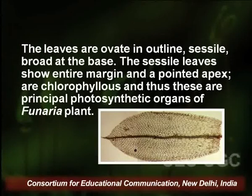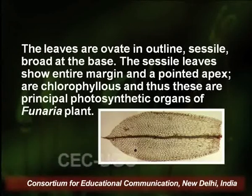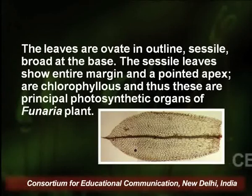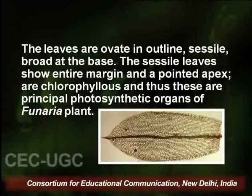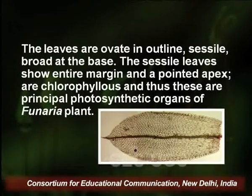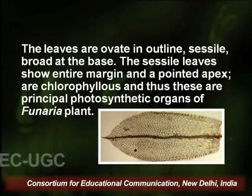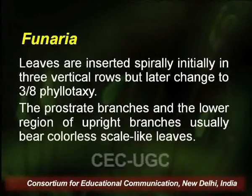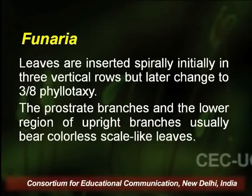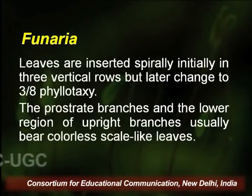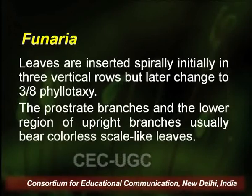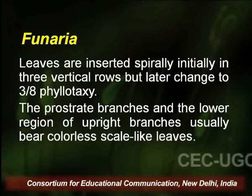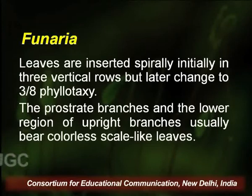The leaves in Funaria are ovate in outline, sessile, and broad at the base. They show an entire margin — meaning no indentation or discontinuity — and the apex of each leaf is pointed. Cells are chlorophyllous, making these leaves the principal photosynthetic organs of the Funaria gametophyte. Leaves are inserted spirally, initially in three vertical rows.